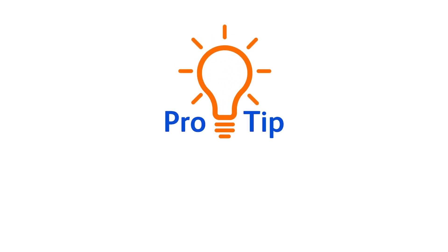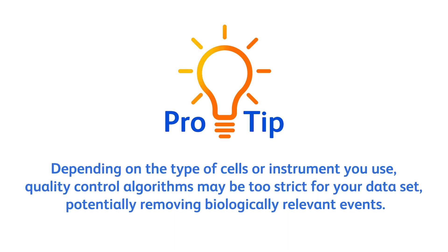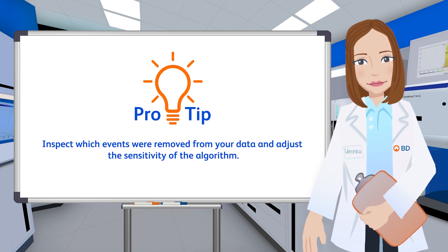Pro tip: depending on the type of cells or instrument you use, quality control algorithms may be too strict for your dataset, potentially removing biologically relevant events. It's always a good idea to inspect which events were removed from your data and adjust the sensitivity of the cleanup algorithms when necessary.